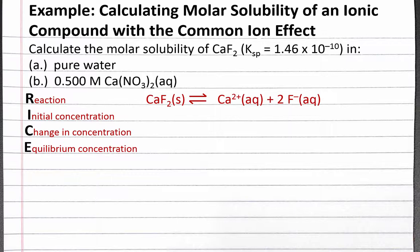When one formula unit of calcium fluoride dissolves in water, it produces one calcium ion and two fluoride ions. We don't need to keep track of solid calcium fluoride in our RICE table because solids are not in our equilibrium constant expression. Since we're dissolving calcium fluoride in pure water for part A, we don't have any calcium or fluoride ions to begin with. Since we don't have any product to begin with, our reaction quotient Q will be 0 and we will be shifting to the right to reach equilibrium. So our change in concentration will be plus x for calcium and plus 2x for fluoride.